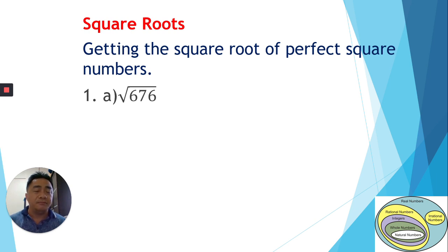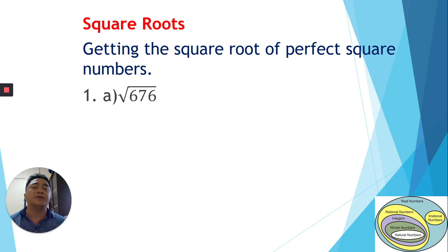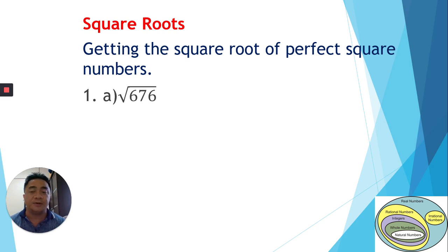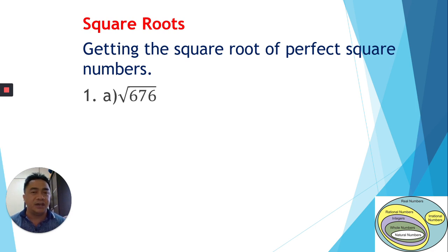In getting the square root, we need to find what is the root of this number — that is why it is called the square root, meaning where does this number come from. This is one method of finding the square root of a perfect square number. Our first example is the square root of 676.